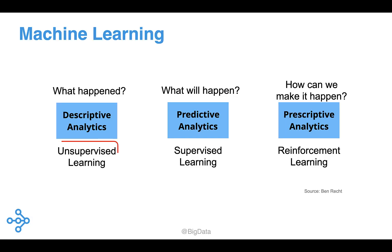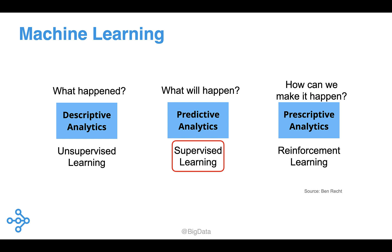Let's quickly review the basic forms of machine learning. In unsupervised learning, one looks for previously undetected patterns in a dataset with no pre-existing labels. Cluster analysis is a common example of unsupervised learning. The most common form of machine learning is supervised learning, a set of techniques that rely on labeled examples. Classification and regression are popular examples of supervised learning.